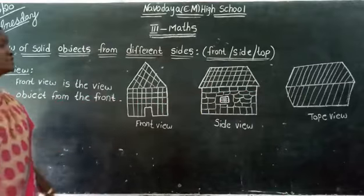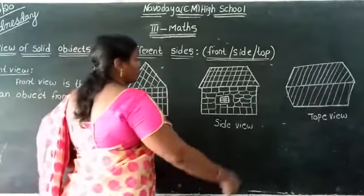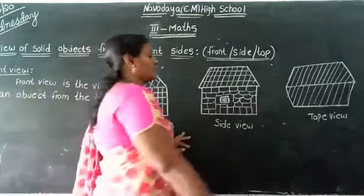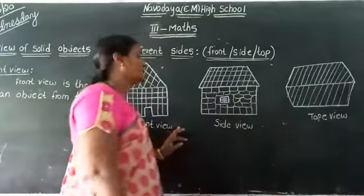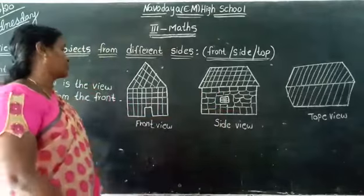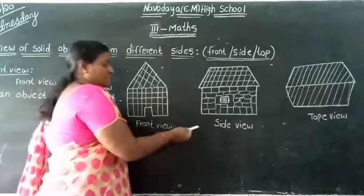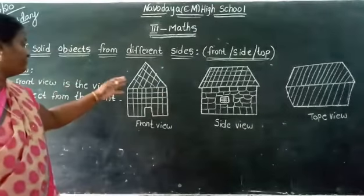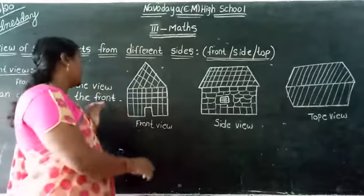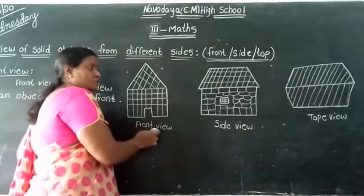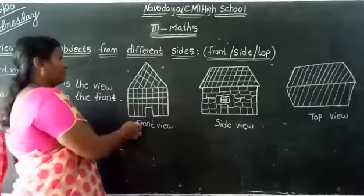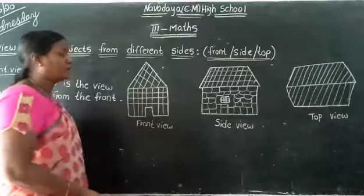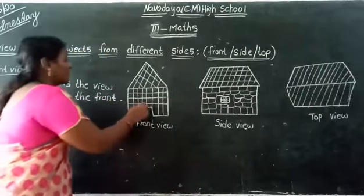The three views are: front view, side view, and top view. We can observe this is a house, and this is also the house, and this is also the house — but these are different views. This is front view, this is side view, and this is top view. Different views will look like different shapes and different sizes.